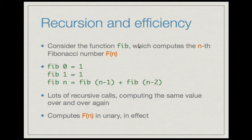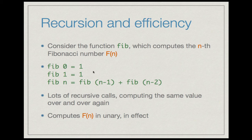Consider the function fib which computes the nth Fibonacci number f(n). fib(0) = 1, fib(1) = 1, fib(n) = fib(n-1) + fib(n-2). This program is a straightforward translation of the mathematical definition of the Fibonacci series, but the problem with it is that there are lots of recursive calls computing the same value over and over again.